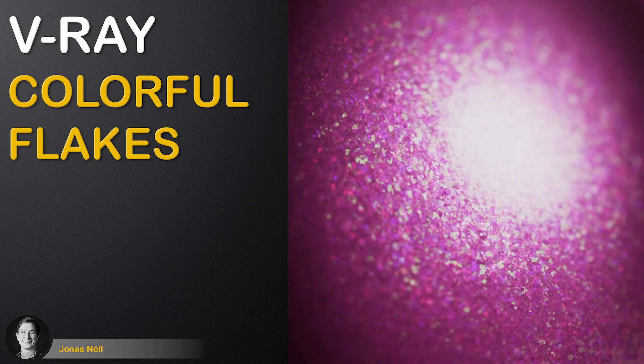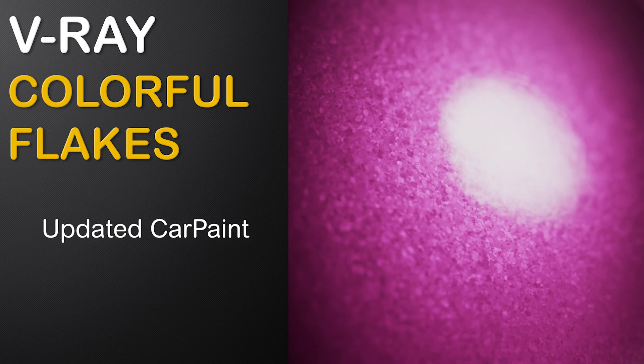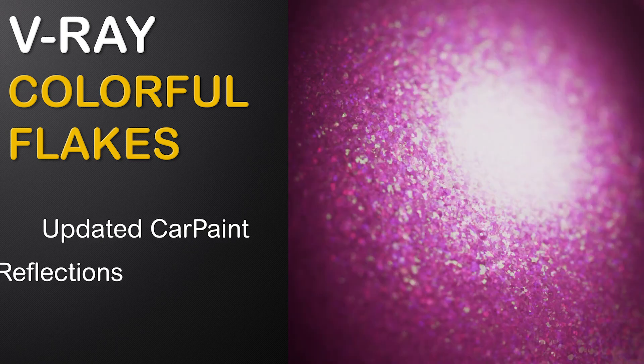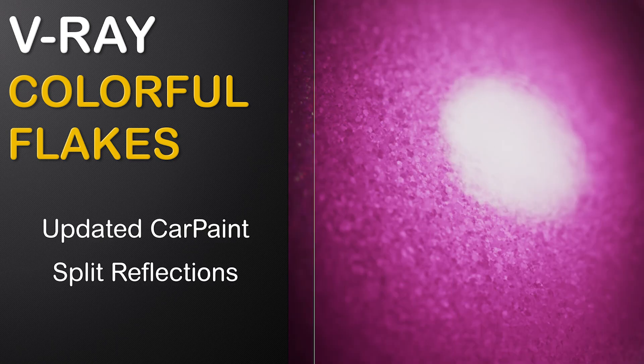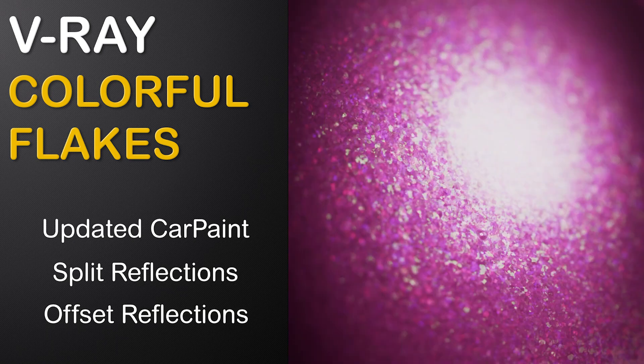In this video you will learn how to create a colorful flake effect. For this we will first use an updated car paint shader workflow, then split up reflections in separate channels and finally offset those channels to blend everything together again to reach the final result.